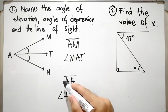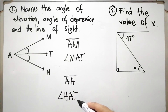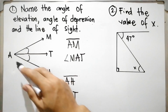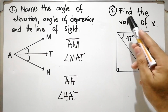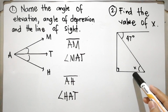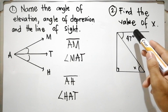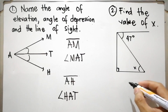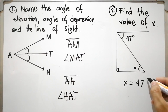The line of sight AH is below the horizontal line, and the angle formed between line segment AT and line segment AH is the angle of depression. For item number two, find the value of X. Since this angle is 47 degrees and is equal to X, therefore X is equal to 47 degrees.